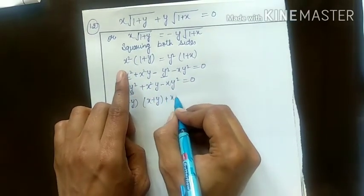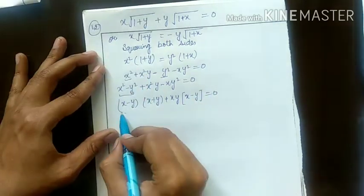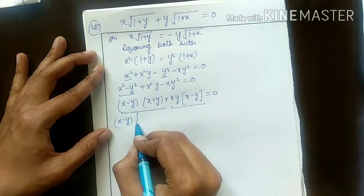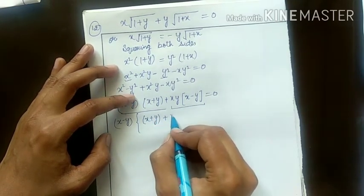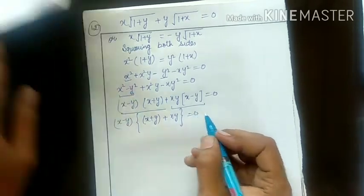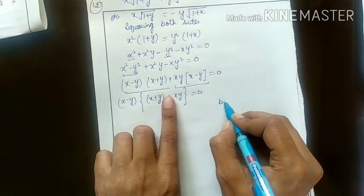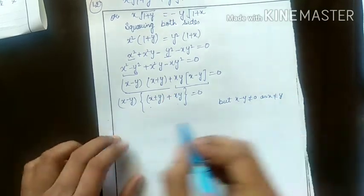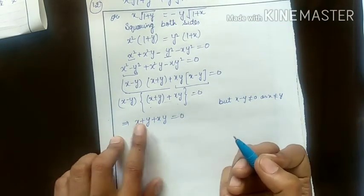This gives (x minus y)(x plus y) plus xy(x minus y) equals zero. One factor is (x minus y) and the other is (x plus y plus xy). Both contain (x minus y), so taking (x minus y) common: what's left inside is x plus y plus xy. Now product of two things is zero, implying either factor is zero. But x minus y is not equal to zero since x is not equal to y. So x plus y plus xy equals zero.